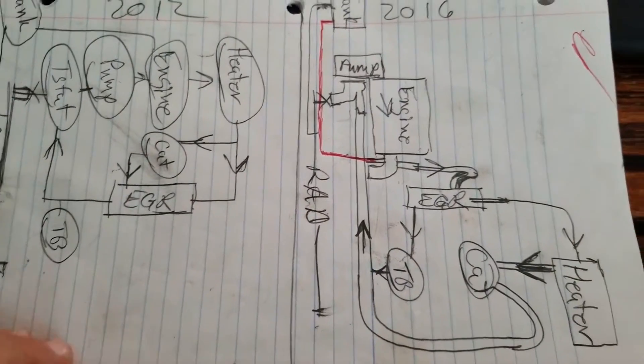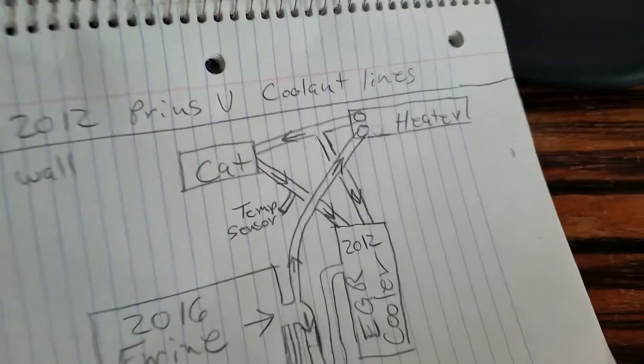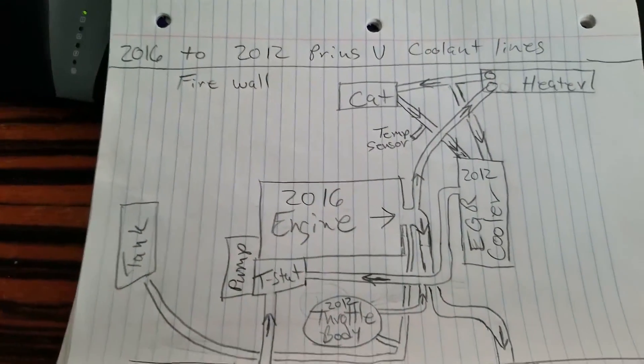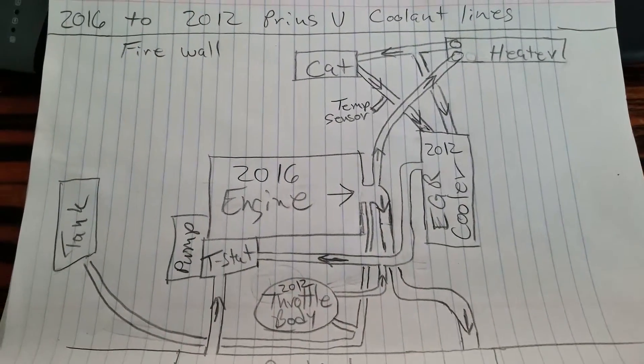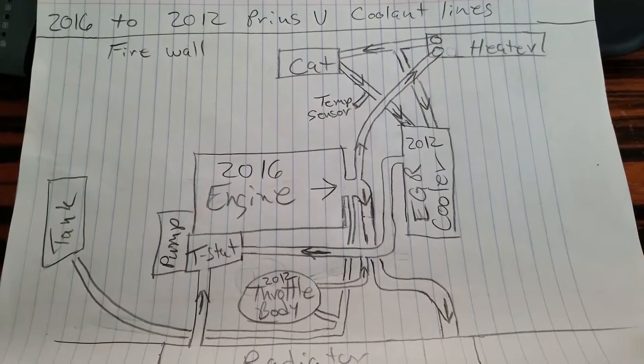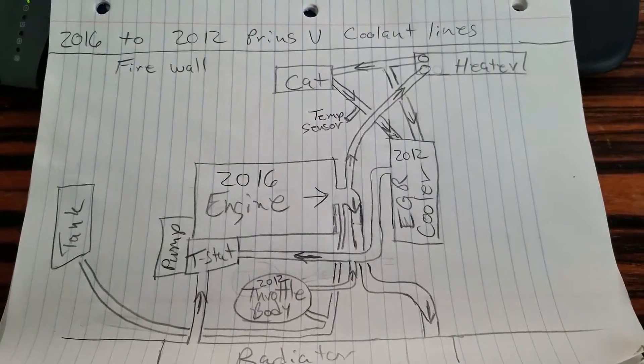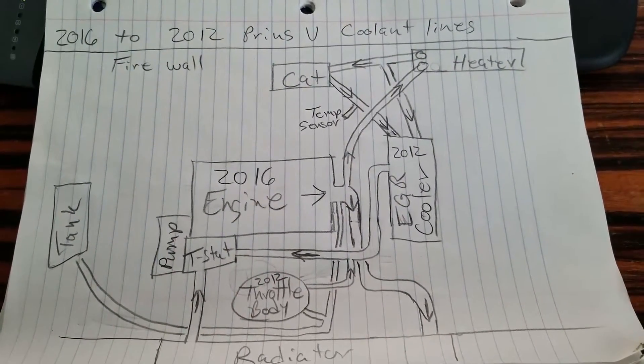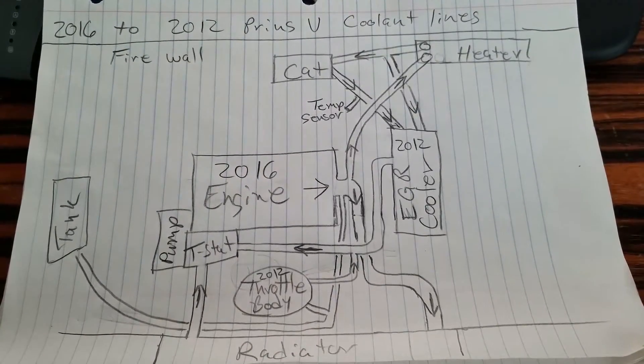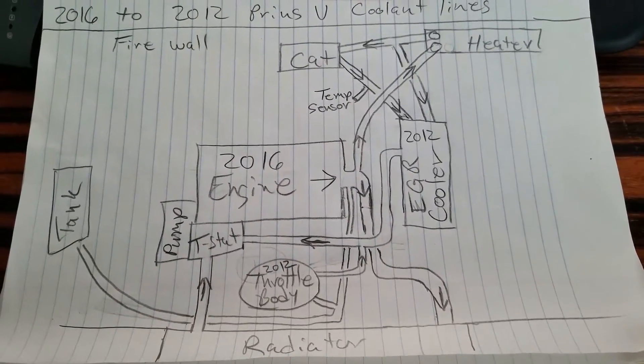And now my new diagram is pretty specific. It seems to be completely accurate. The hoses I didn't do the exact routing that you'll find in the car. I'm not showing molded hoses and curves in the hoses and stuff like that. But the connections are correct. The locations are correct. The flow is correct.